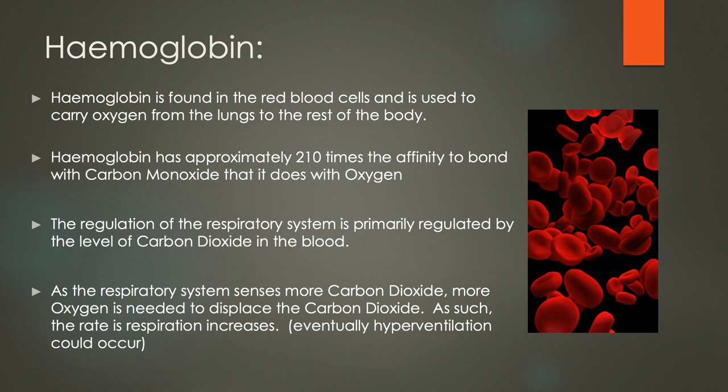Within blood we have something called hemoglobin. It's found in the red blood cells and its job is to carry oxygen to the lungs and around the rest of the body — it's effectively a carrier of oxygen. Hemoglobin has approximately 210 times the affinity bond with carbon monoxide than it does with oxygen. So if carbon monoxide is present in the atmosphere, the carbon monoxide is much more likely to bond with the red blood cells and be carried around the body than oxygen would. We'll talk about the effects and how to avoid issues if we are exposed to carbon monoxide.